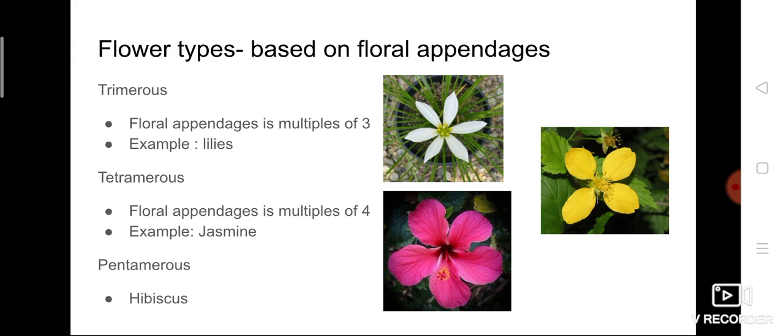Pentamerous means penta — five. If the floral appendages, that is the number of petals, are five or multiples of five, it comes under pentamerous. The best example is hibiscus — counting the petals: one, two, three, four, five — so five or multiples of five (ten, fifteen, twenty, twenty-five) come under pentamerous.